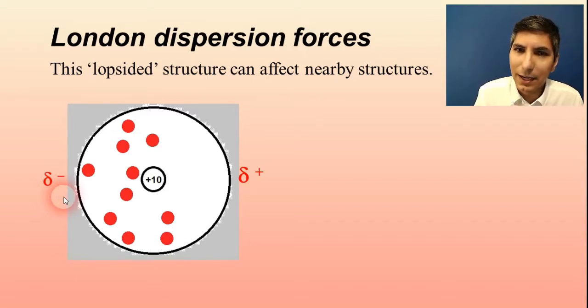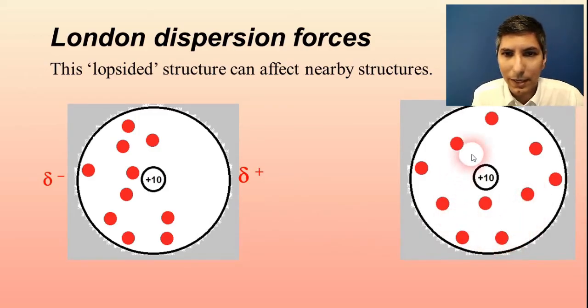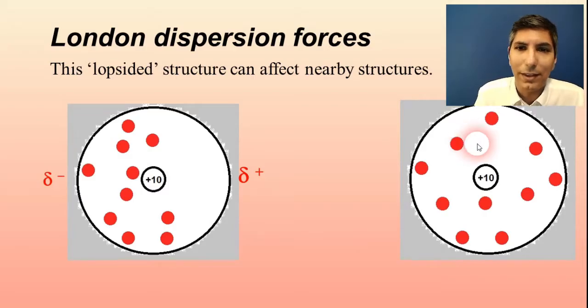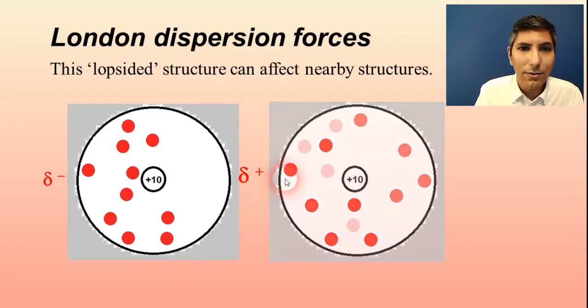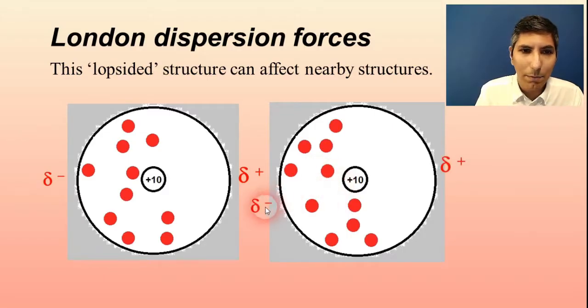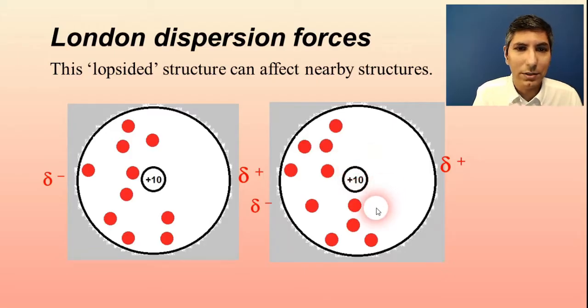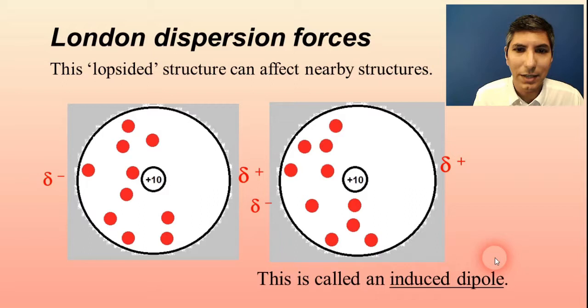Now this lopsidedness, this instantaneous dipole can affect nearby structures. Let's imagine that we have another atom of neon over here and it's minding its own business. It's got its electrons fairly evenly distributed just like the last one had at a certain point. But if it's moving and it moves over here, guess what's going to happen to the electron distribution? Well, the fact that this atom over here has a positive, a partial positive charge is going to attract the electrons to that side of the atom. And so now this atom is going to have a partial negative charge and a partial positive charge as well. Now this is not just something that happened because of statistics and probability, this atom was induced to be like this because of its neighbor. We call this an induced dipole.